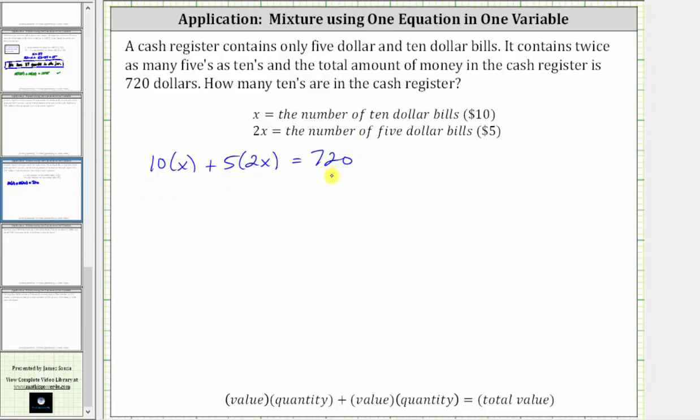Now we need to solve for x. On the left, 10 times x is 10x plus 5 times 2x is 10x. Combining like terms, 10x plus 10x is 20x. 20x equals 720.